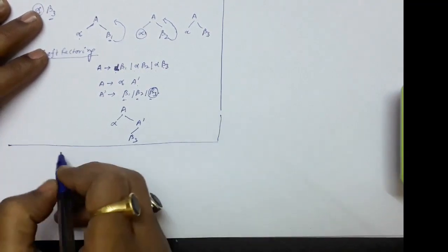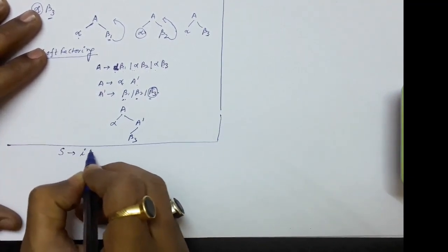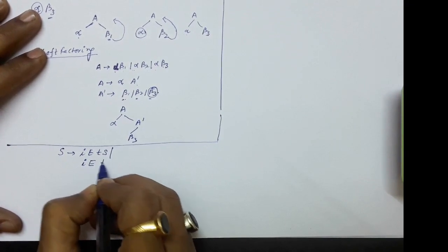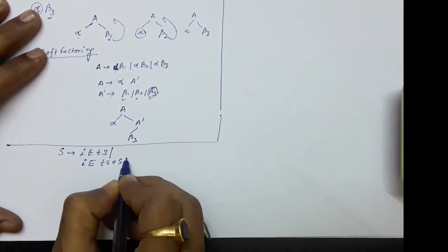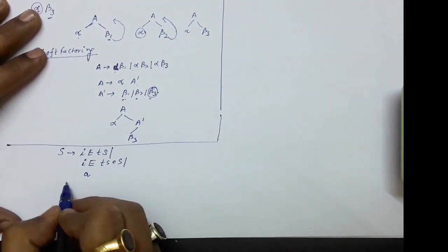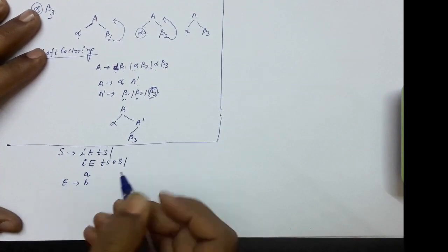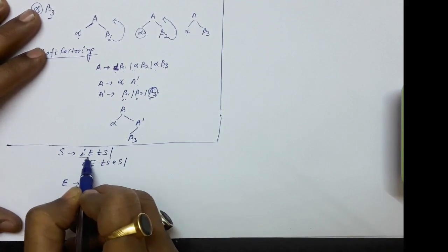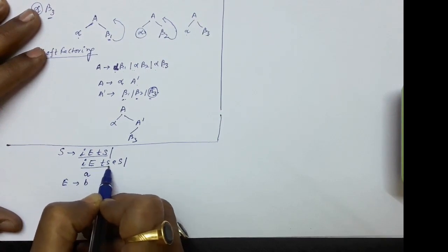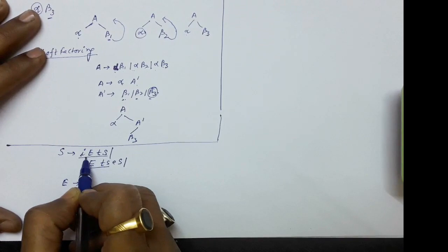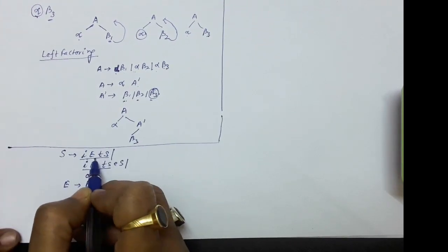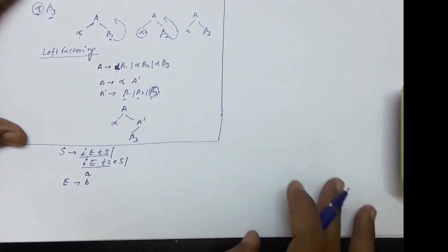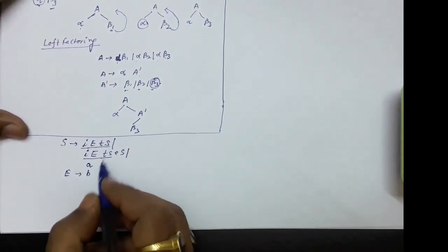Let us take the first example. S produces iEtS as the first production, then iEtSES, and also A. Additionally, E produces B. If you look at iEtS and iEtSES, the prefix iEtS is common in both productions. So we will be confused whether to use the first or second production when deriving a string. To remove this confusion, we apply left factoring: take the common prefix iEtS and introduce the new symbol S′.